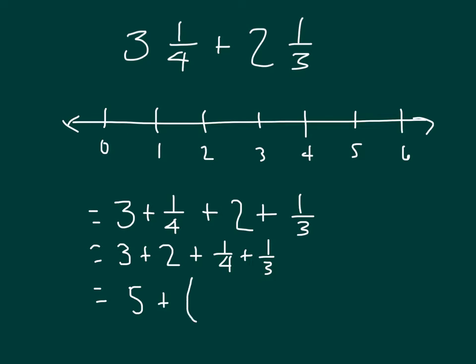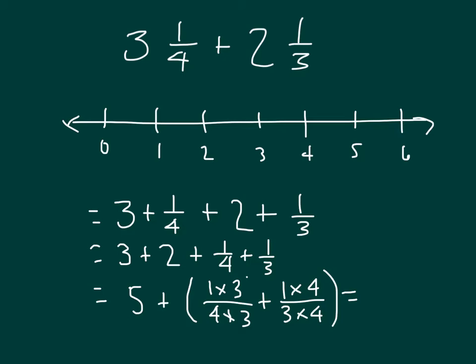So we have 1 times 3 over 4 times 3, plus 1 times 4 over 3 times 4. Our common denominator is 12. Doing our work here, we have 5 plus the rest of that.